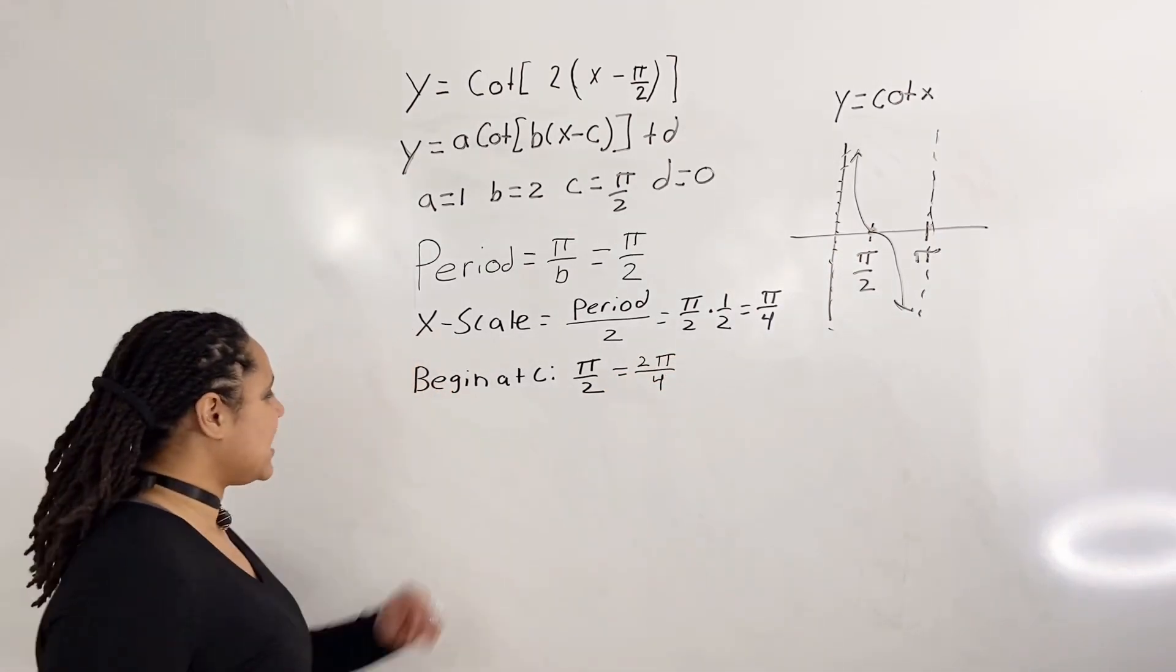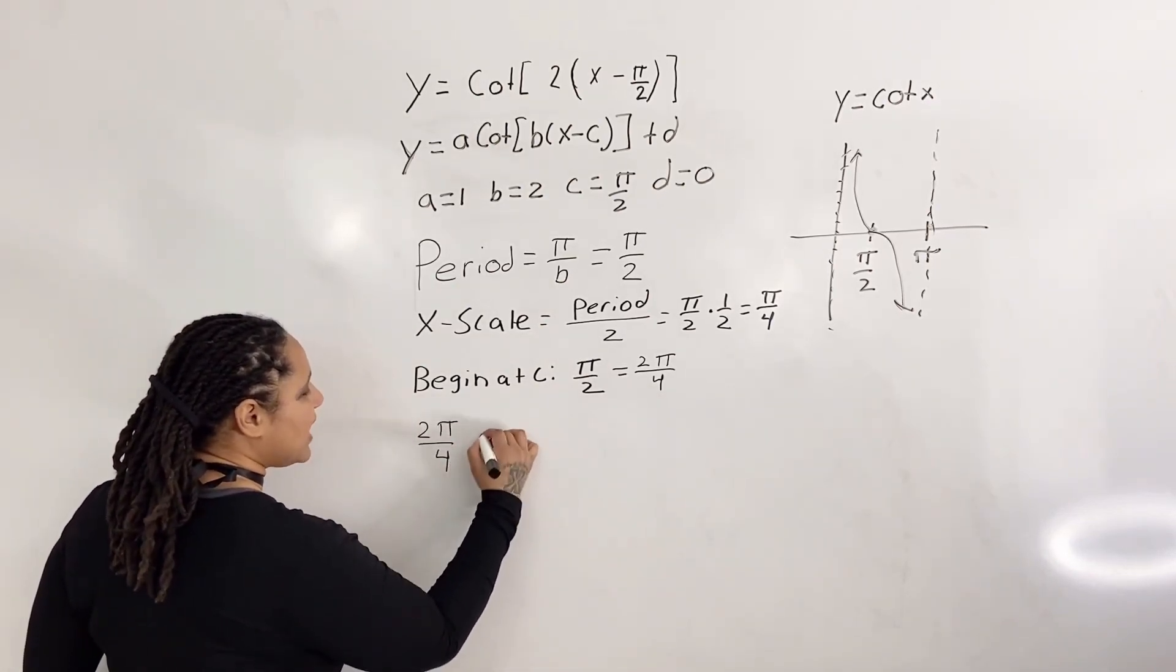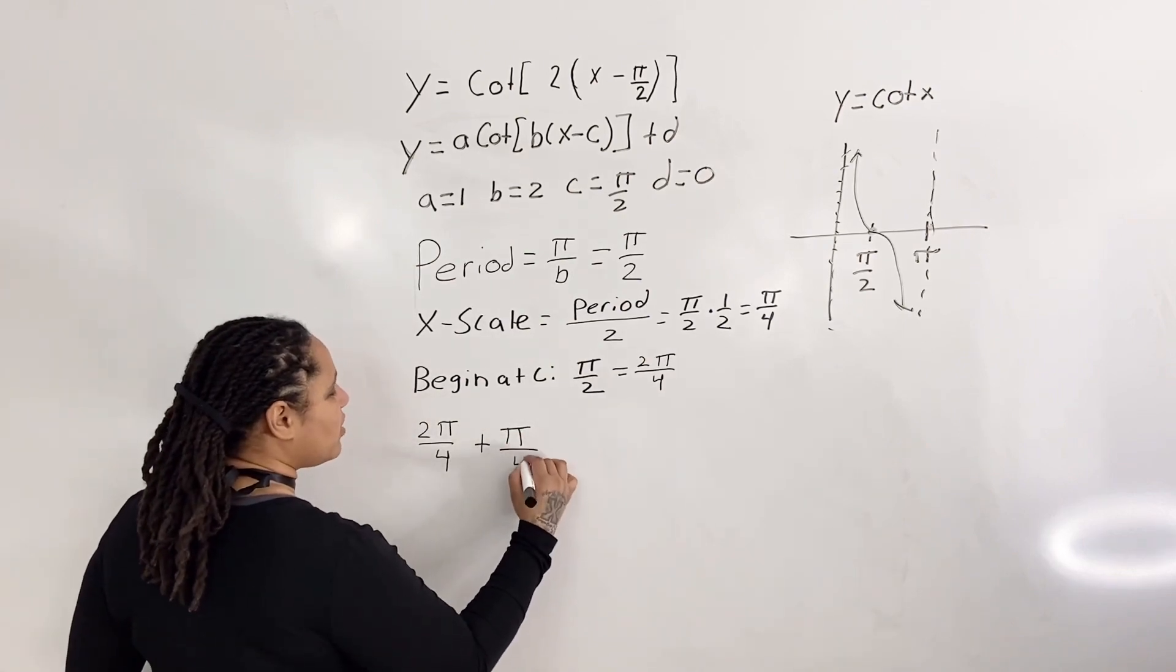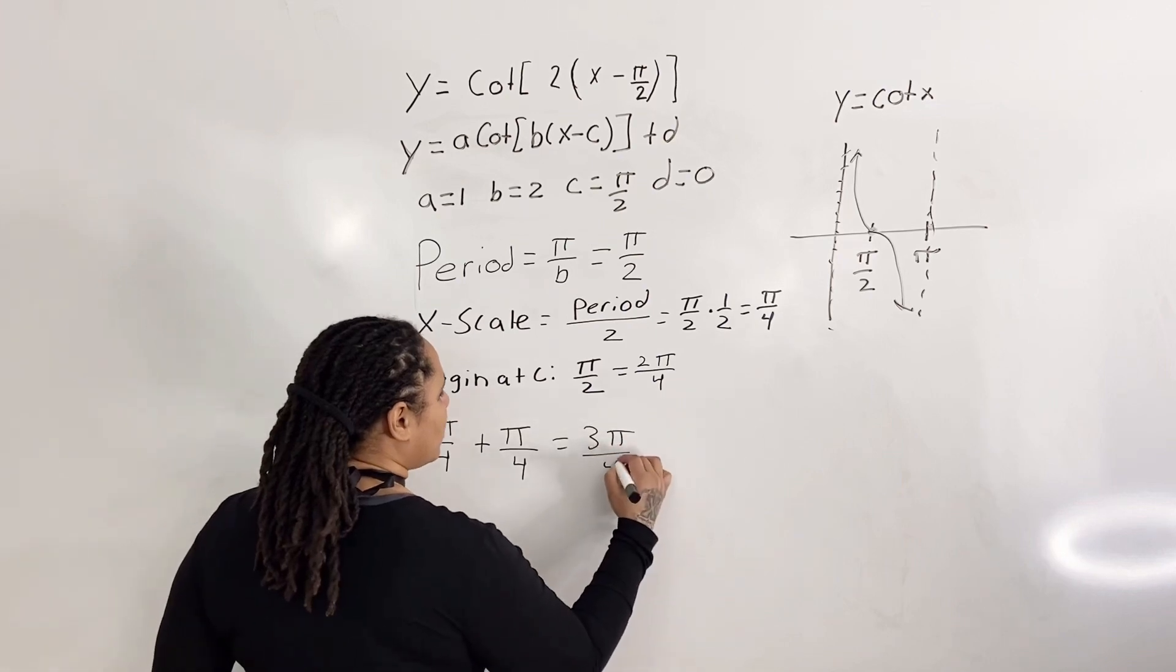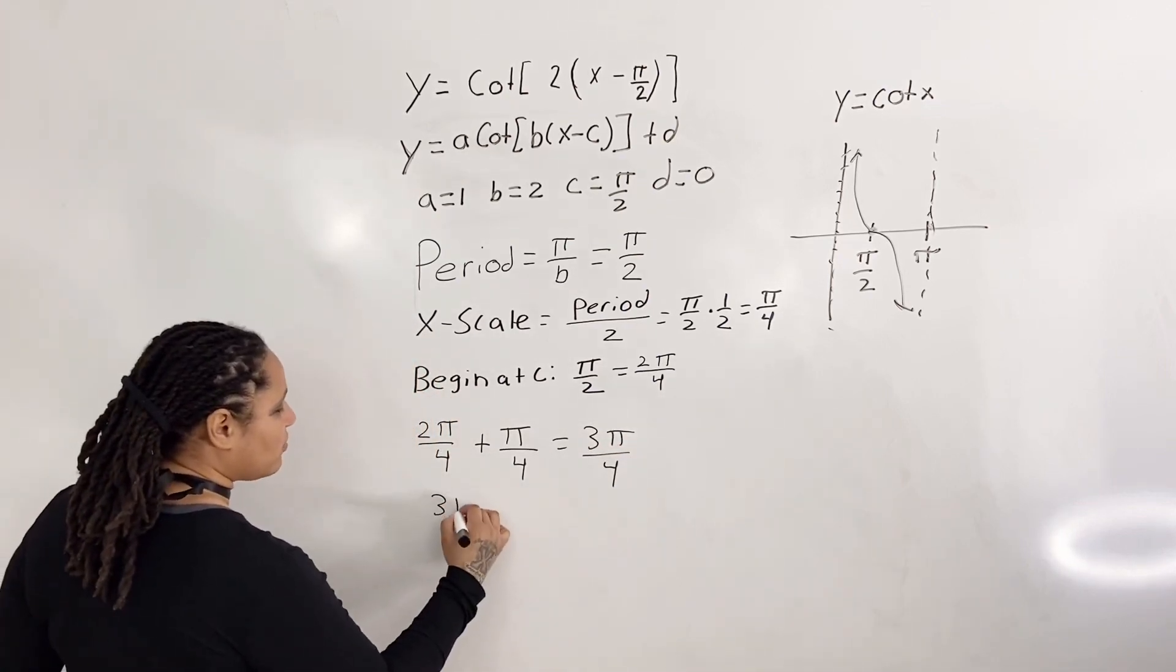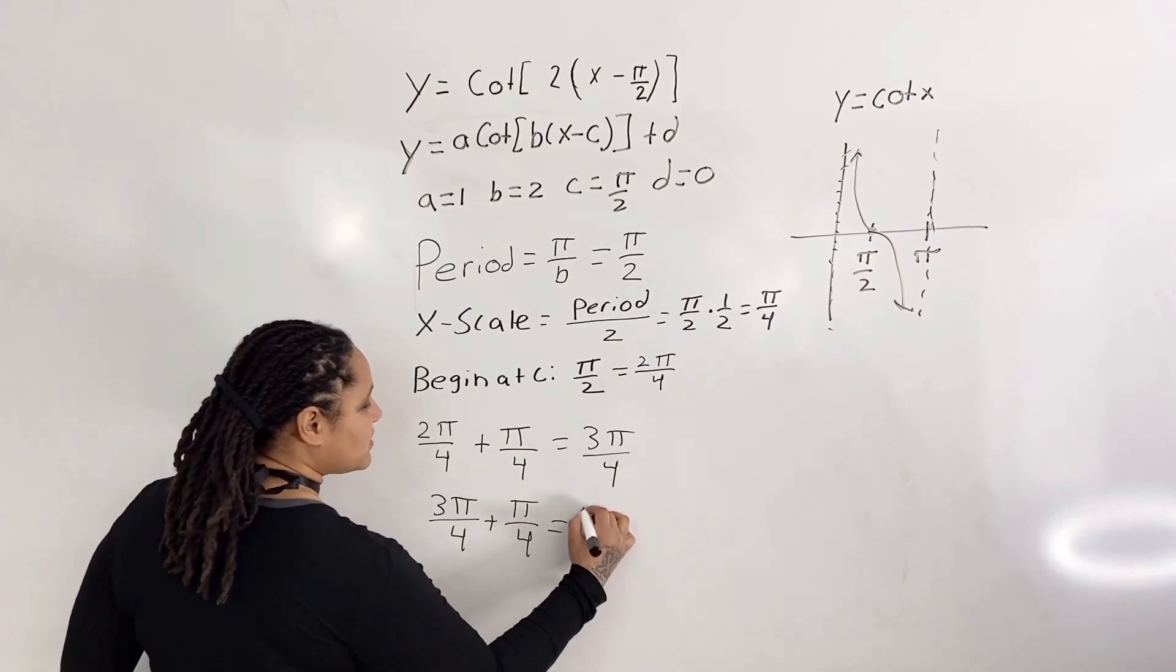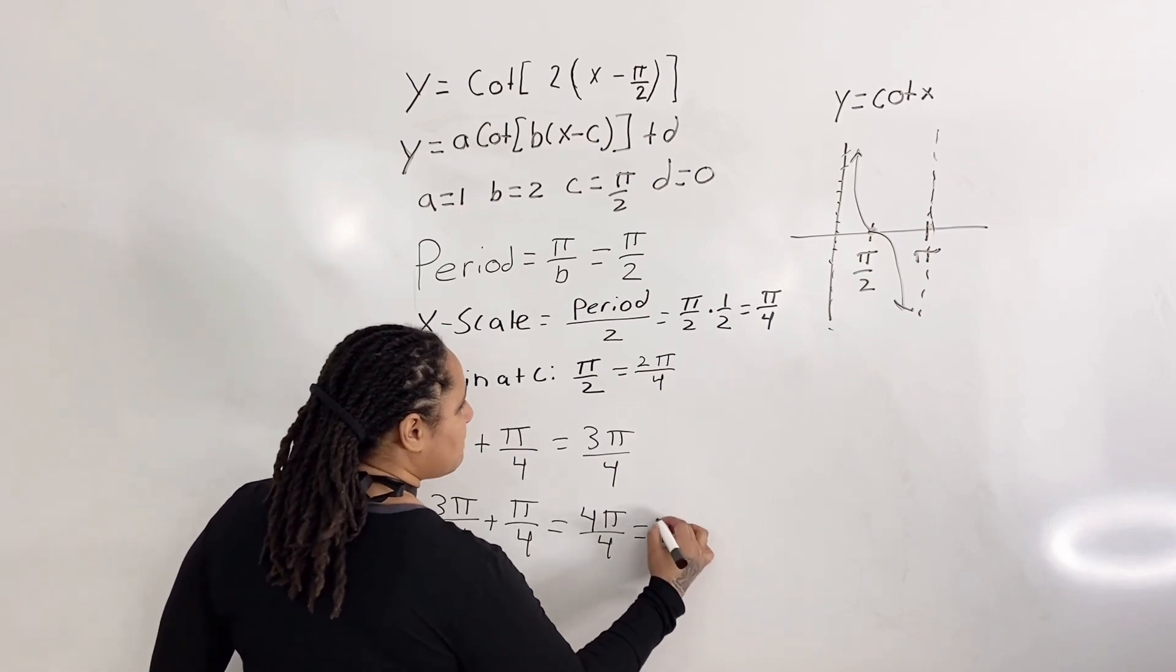So since we're beginning at c, I'm going to go ahead and write 2 pi over 4, and I'm going to add an increment of pi over 4. So 2 pi over 4 plus pi over 4 is equal to 3 pi over 4. Again, take 3 pi over 4 and add another pi over 4, and that's going to give us 4 pi over 4, which reduces to pi.